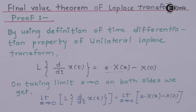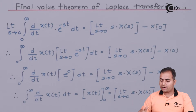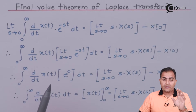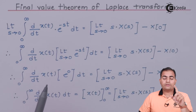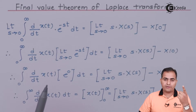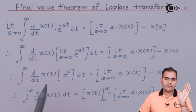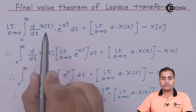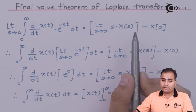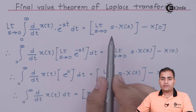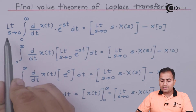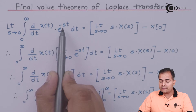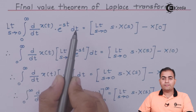Expanding the left-hand side using the definition of the Laplace transform, we write the integral of d/dt x(t) multiplied by e^(−st) dt, integrated from 0 to infinity. The limit as s→0 is applied to both sides. Taking the limit inside the integral, only e^(−st) is affected by the limit, since all remaining terms become constant.